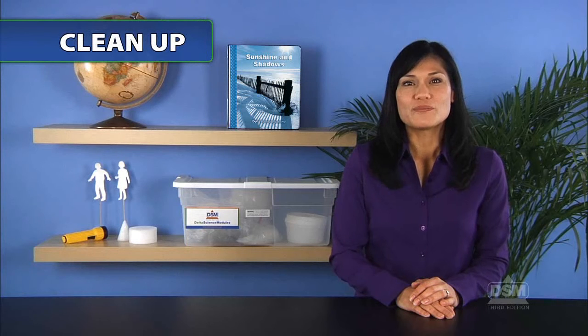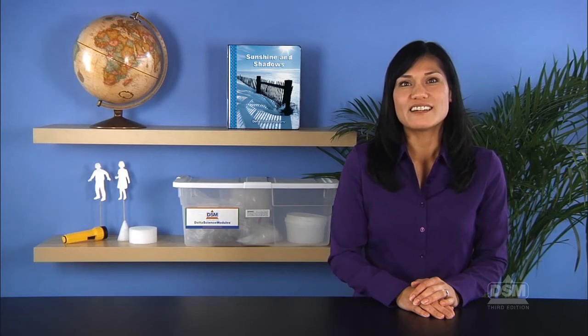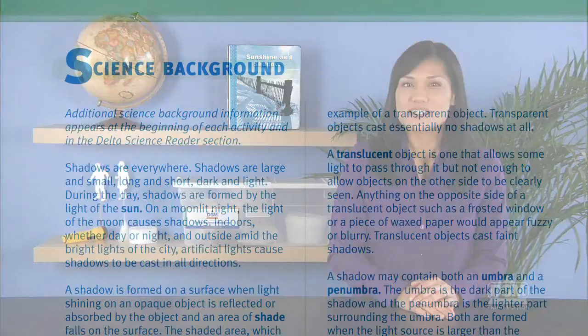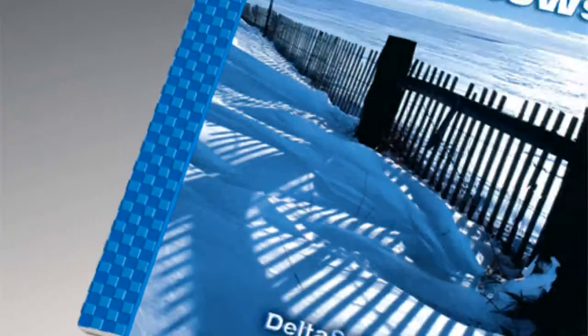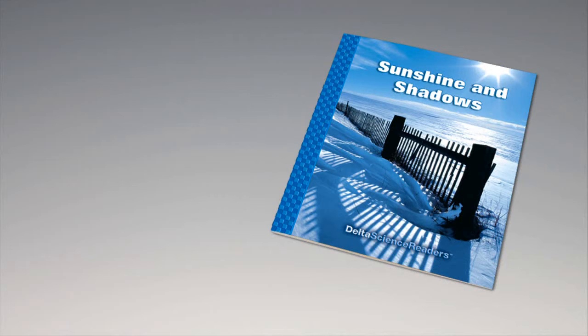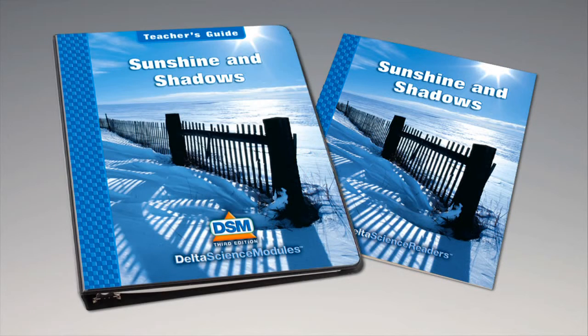To conclude Session 4, have the students take the clay off the dowel, put it in the reclosable plastic bags, and return these to the kit, along with the dowels and chalk. You may wish to display the sundials on the walls. For science background, reinforcement activities, curriculum connections, and information about the Delta Science Reader, please consult your DSM Teacher's Guide.